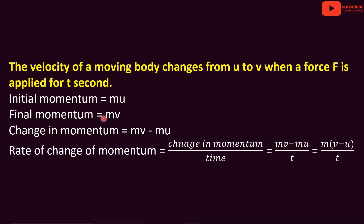The final momentum is equal to m into v, where v is the final velocity. The change in momentum is the final momentum minus the initial momentum, that is mv minus mu. The rate of change of momentum is the change in momentum divided by time, which equals m into (v minus u) divided by t.